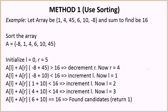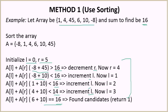Let us understand this with a dry run of the algorithm. We are given this array and the target sum is 16. We initialize L with 0 and R with 5, and at each step compare the sum of elements at L and R with 16. If the sum is greater than 16 we decrement R; if smaller we increment L. We continue until we find that 6 plus 10 equals 16 — our candidate pair — and return 1.